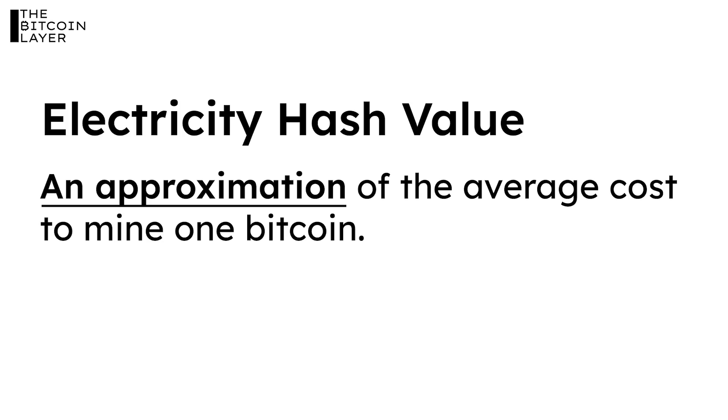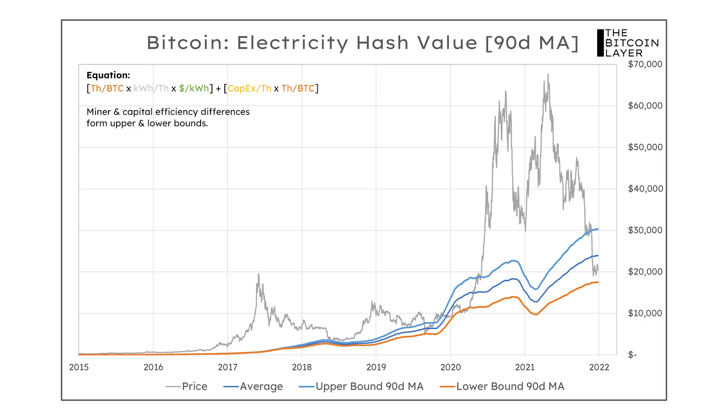Number three: electricity hash value. This is a proprietary metric we use at the Bitcoin Layer. We're combining miner efficiency, how much it costs to purchase mining equipment, electricity cost, and the difficulty of Bitcoin's algorithm to mine Bitcoin. Combining all these factors, we arrive at our electricity hash value — what we believe to be the cost to mine one Bitcoin. Just like the cost to drill one barrel of oil or mine one ounce of gold, the mining cost of Bitcoin is a relevant factor in valuing its price.